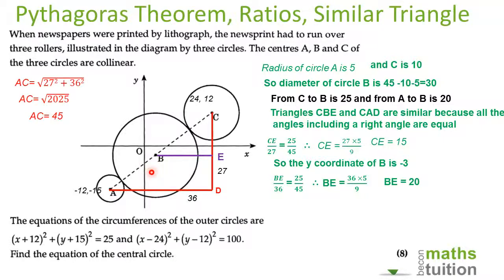Because from there to there is 20, from there to there is 16. But we know that from the center of circle A to the y-axis is 12, which means that from the center of circle B to the y-axis has got to be 4.